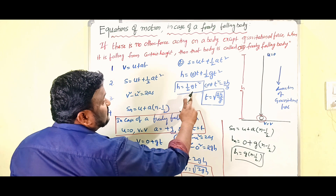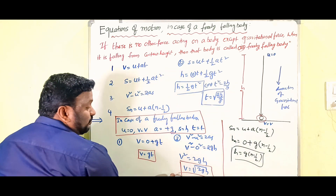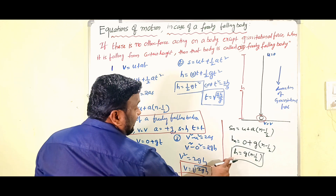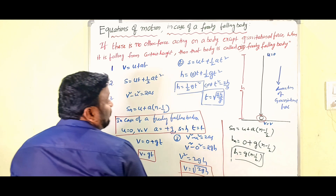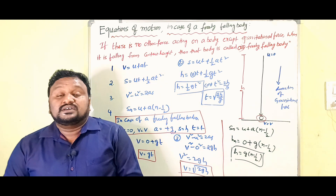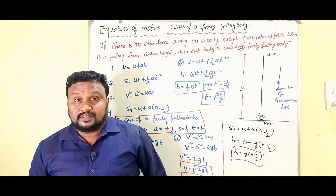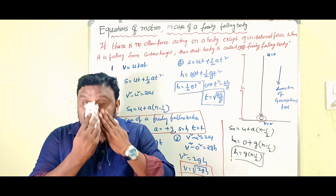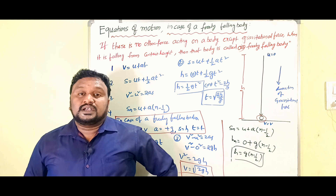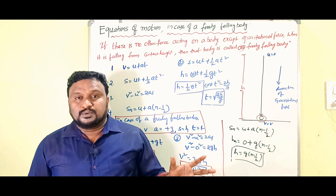So children, the four equations of motion in case of a freely falling body are: first, v equals gt; second, h equals half g t squared, or t equals square root of 2h by g; third, v equals square root of 2gh; and fourth, h equals g of n minus half. These are very easy — this is minimum basics.